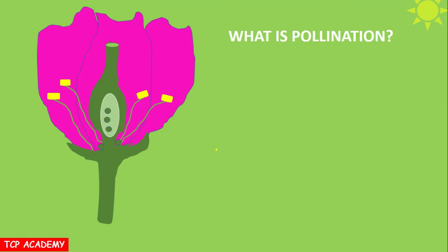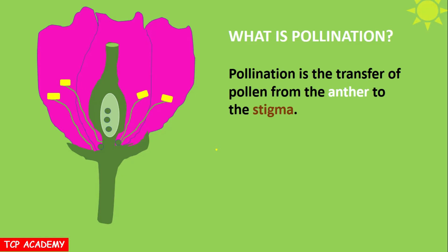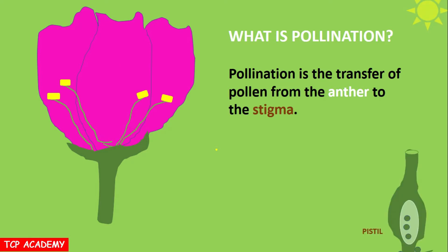What is pollination? Pollination is the transfer of pollen or pollen grains from the anther to the stigma. The anther is the male reproductive part of a plant, while the stigma is part of the female reproductive part of a plant — the pistil — for which the stigma is also a part.